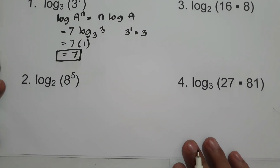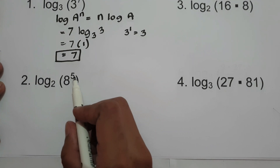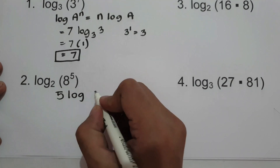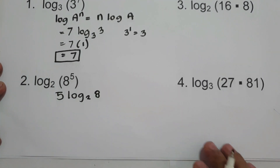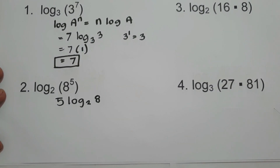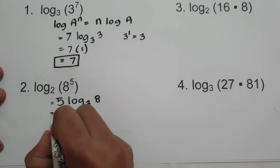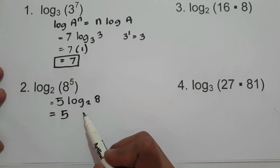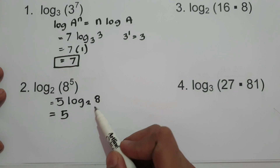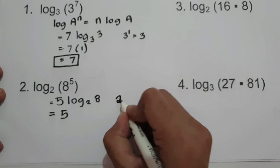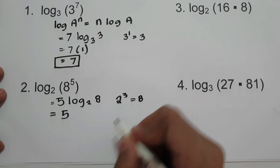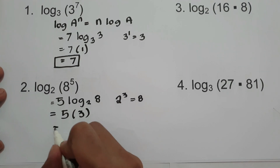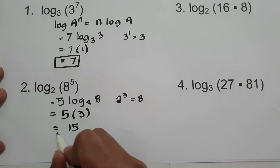For number 2, we have log of 8 raised to 5, base 2. Applying the power rule, we get 5 times log 8 base 2. Now, how many 2s do we need to multiply to get 8? We know that 2 raised to 3 is 8, so log 8 base 2 is 3. Therefore, 5 times 3 is 15. That is our answer.